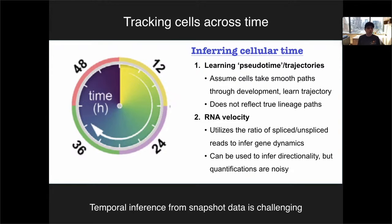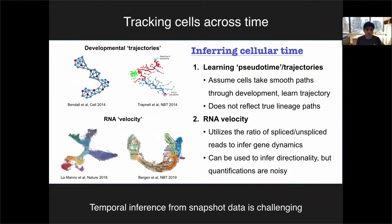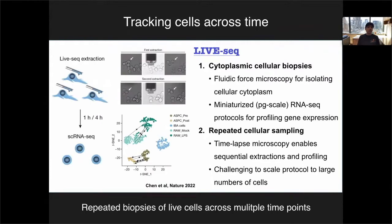There are many different strategies that people have used to solve this problem. The first approach was to perform computational inference — for example, to learn developmental trajectories or pseudotime, assuming that cells take a smooth path through molecular space. Another way is to infer RNA velocity, which uses the ratio of spliced and unspliced reads to infer transcriptional dynamics. These are valuable tools, but they are computational inferences — we don't have any way of knowing for sure if the trajectories they return really represent real biological time. It would be amazing if there was some way to inject ground truth about time into the data.